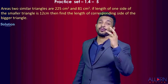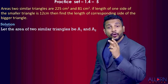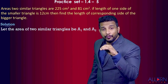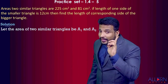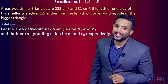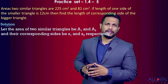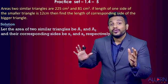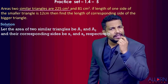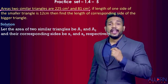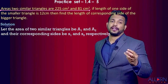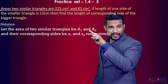So the first statement would be: let the areas of the two similar triangles be a1 and a2, and let the corresponding sides be s1 and s2 respectively. That's the first thing we write because the names of the triangles are not given. Now let's see what is given in the problem.